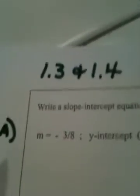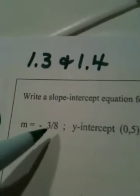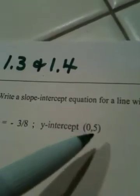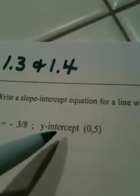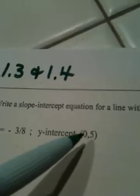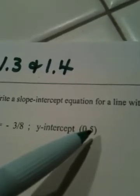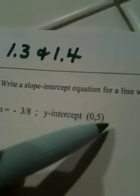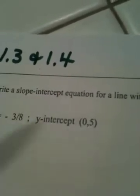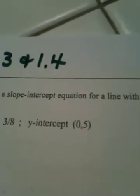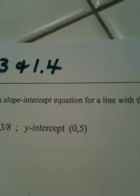Notice what they gave me in part A. They gave me the slope of the line, and they gave me the y-intercept. In fact, they really didn't need to tell me this was the y-intercept, because if I see 0 comma a number — if you pictured where that was on graph paper, 0 comma 5 would be on the y-axis, so that of course is the y-intercept.